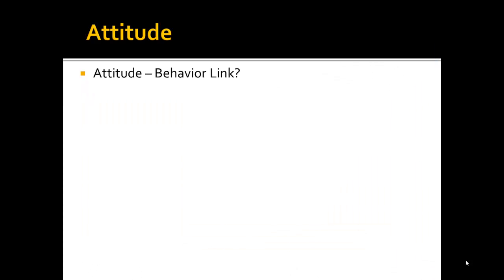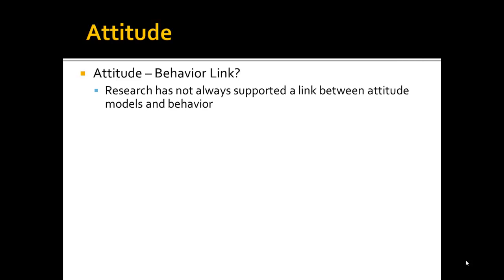The whole point of measuring attitudes is to be able to predict behavior. The theory says: we think, we feel, then we do. But is that supported by research? Especially in the past, research has not always supported attitude theory — attitudes often vary from predicted behavior. People may predict they'll go to Chili's, but they don't. So let's look at some explanations for this.